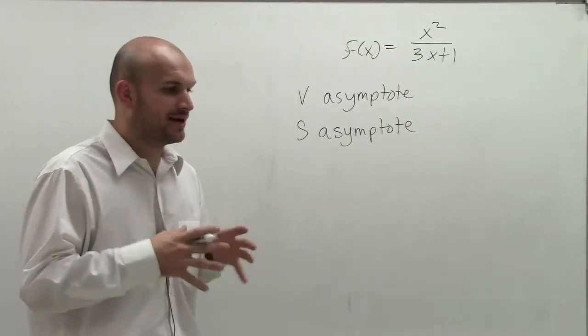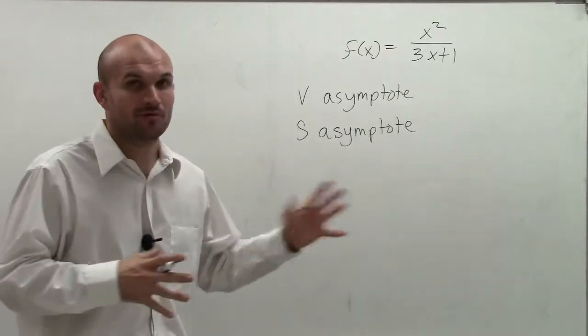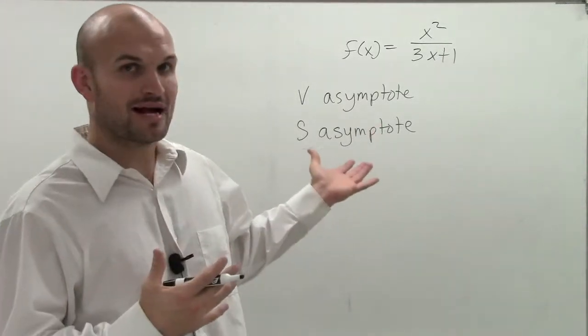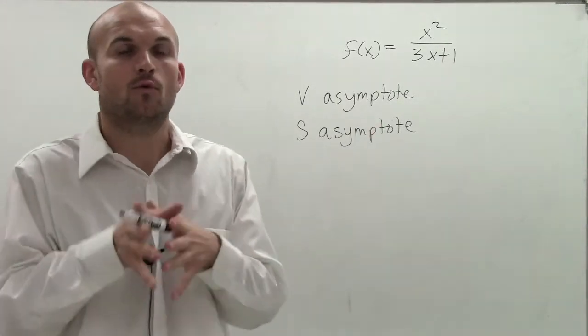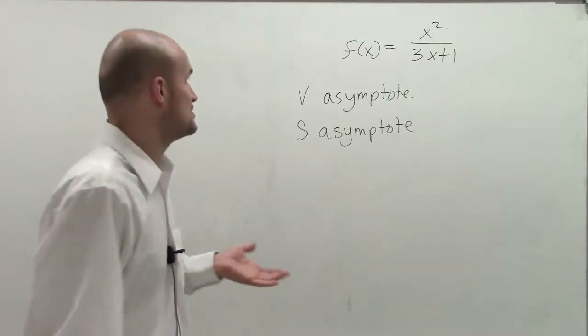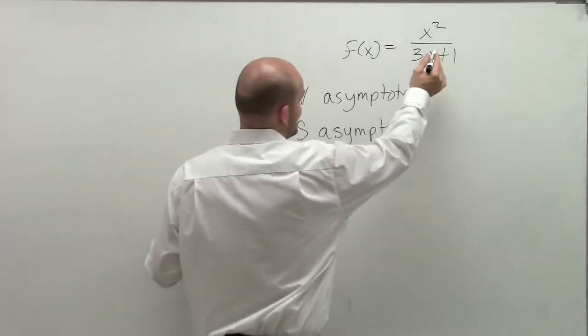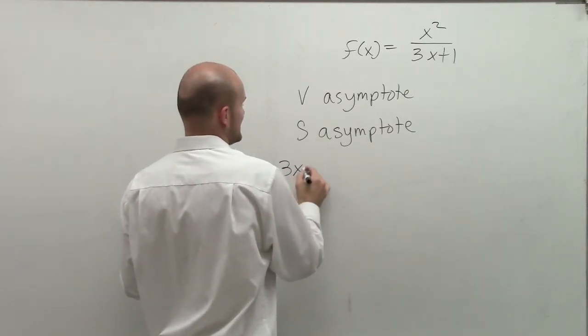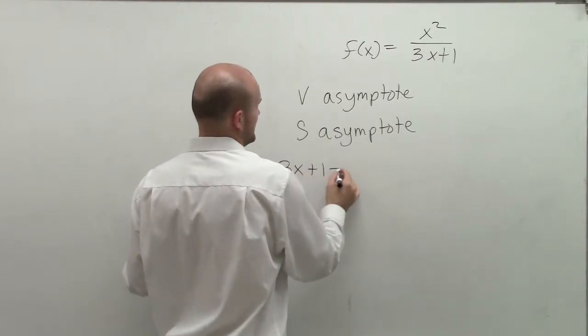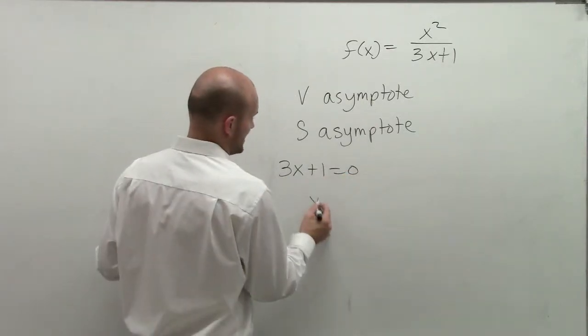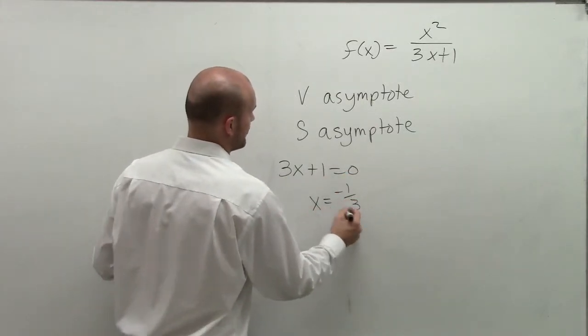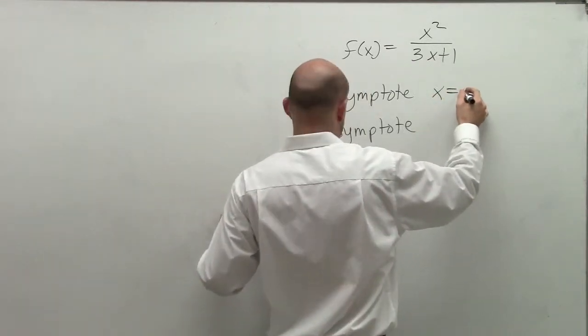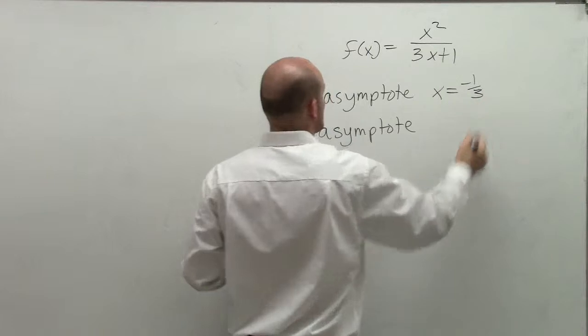To find the vertical asymptote, remember the vertical asymptote, especially for a rational function, is where our denominator equals zero. To find the values of x that make my denominator equal zero, I'm simply going to set 3x plus 1 equal to 0. Then I solve and get x equals negative 1/3. Therefore, my vertical asymptote is x equals negative 1/3.